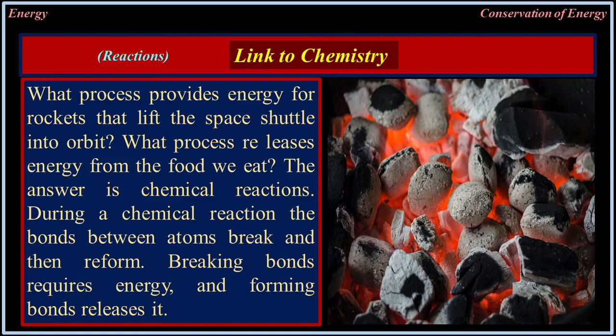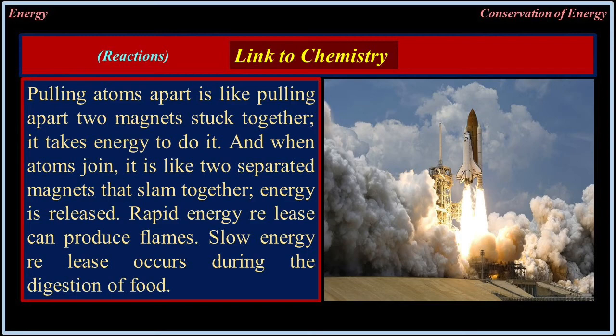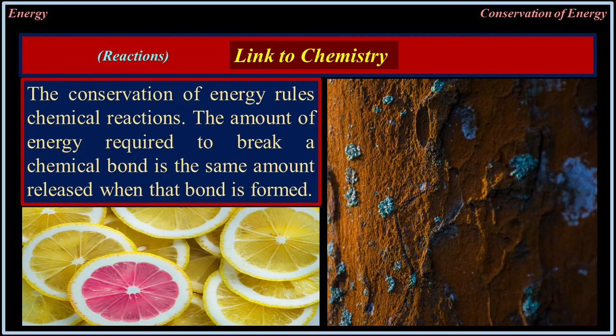Links to chemistry: chemical reactions provide energy for rockets and for the food we eat. During a chemical reaction, bonds between atoms break and then reform. Breaking bonds requires energy; forming bonds releases energy. Pulling atoms apart is like pulling apart two magnets — it takes energy. When atoms join, energy is released; rapid release can produce flames, while slow release occurs during digestion of food. The conservation of energy governs chemical reactions: the amount of energy required to break a bond equals the amount released when that bond is formed.